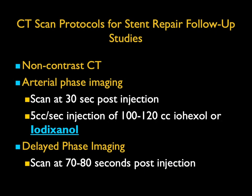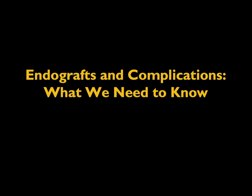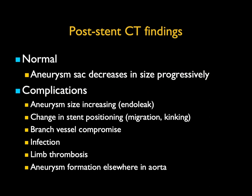Once you have a patient with an endovascular stent, we do non-contrast scans, then arterial phase imaging, and a delay at about 80 seconds. We look at axial and multi-planar images including curved planar, as well as MIP and volume rendering. If you do a successful endovascular stent repair, over time the aneurysmal sac will typically decrease in size — that's the best way of knowing things worked well. But if it increases in size, you typically have an endoleak.